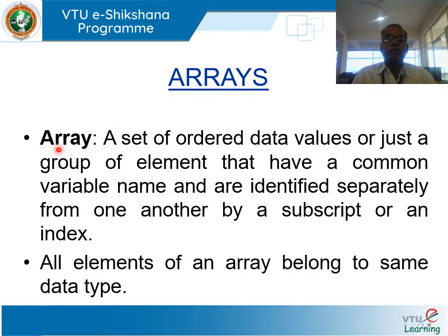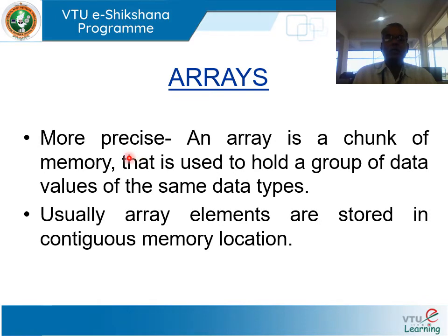What is an array? An array is a set of ordered data values, or just a group of elements that have a common variable name and are defined separately from one another by a subscript or an index. All elements of an array belong to the same data type. More precisely, an array is a chunk of memory used to hold a group of data values of the same data type. Usually, array elements are stored in a contiguous memory location.